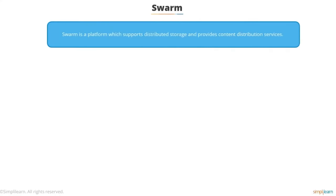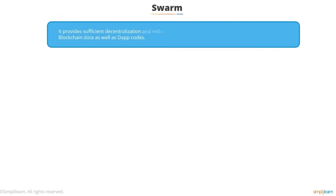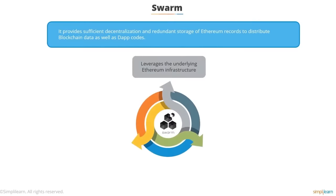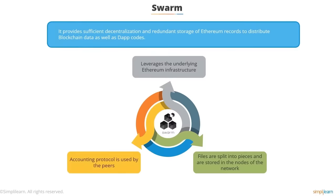Swarm is a platform which supports distributed storage and provides content distribution services. It acts as a native base-layer service of the Ethereum Web3 stack, providing decentralized and redundant storage of Ethereum records to distribute blockchain data as well as DApp code. It leverages the underlying Ethereum infrastructure through contracts and Ether to encourage cooperation among nodes. Files are split into pieces and stored in nodes of the network. An accounting protocol is used by peers to keep track of chunks delivered and received, with resulting micropayments associated with it.